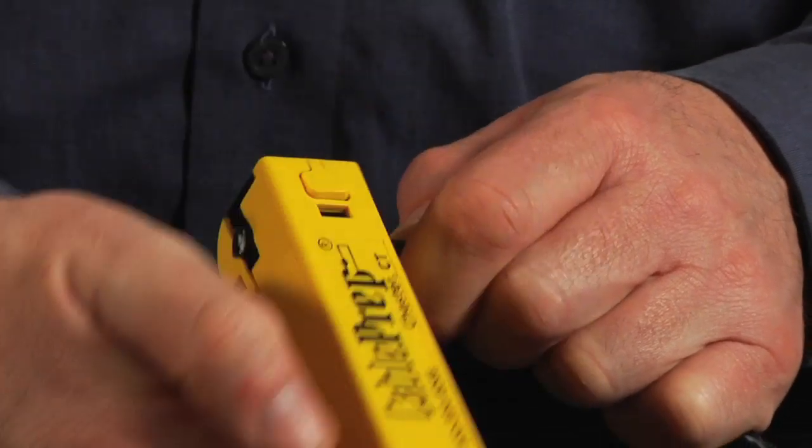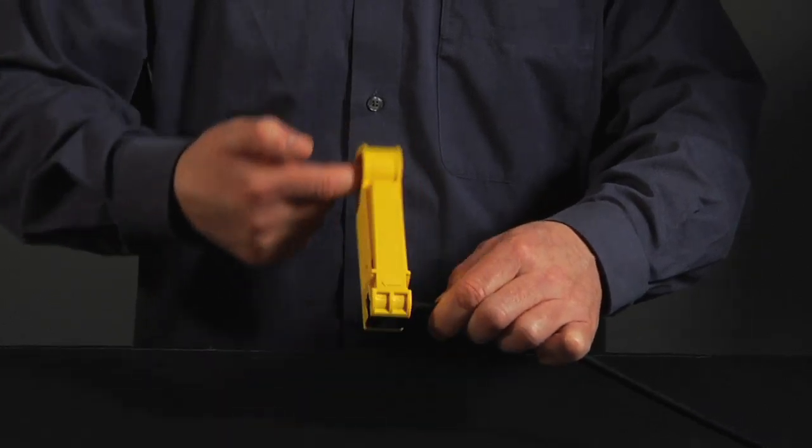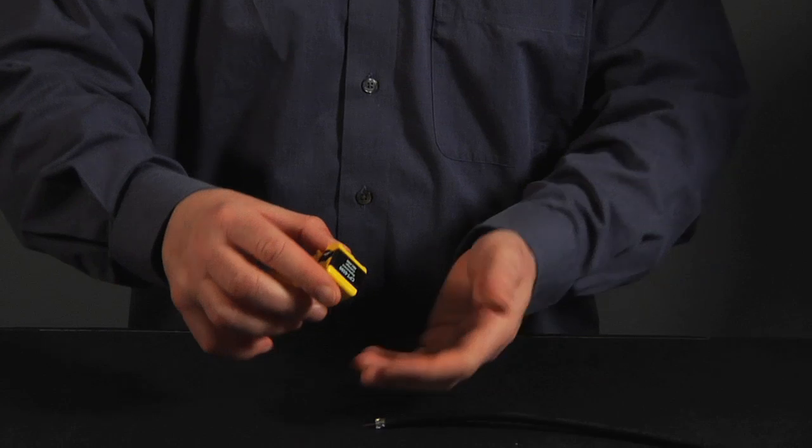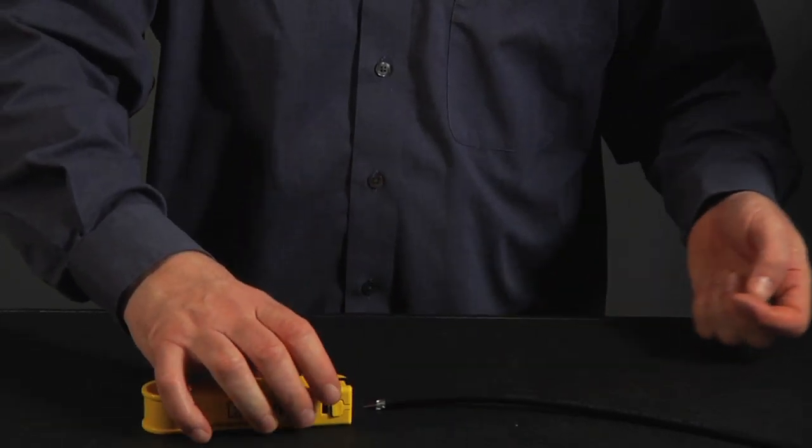Spin the tool forward three times. Reverse the spin for two turns. Grasp the head of the tool and pull. The patented clean-out feature automatically removes the debris.